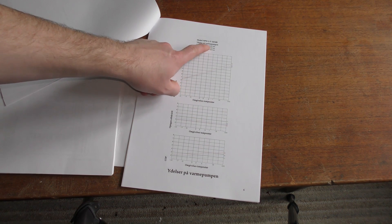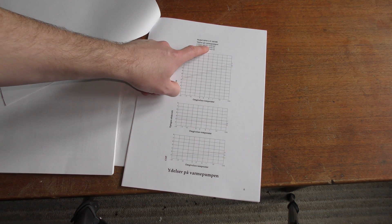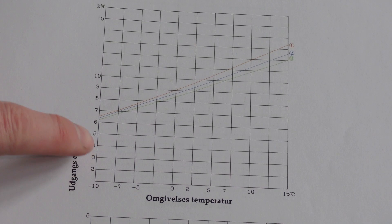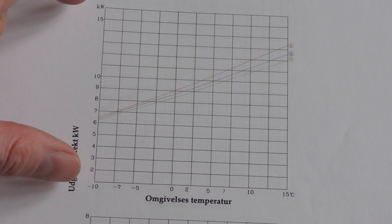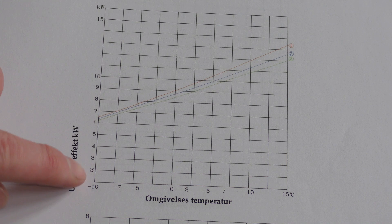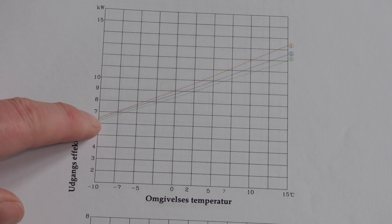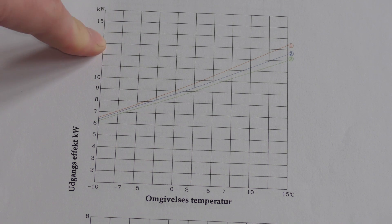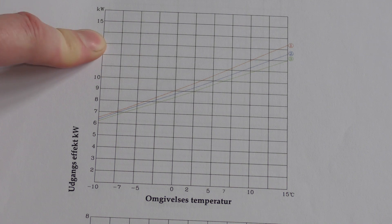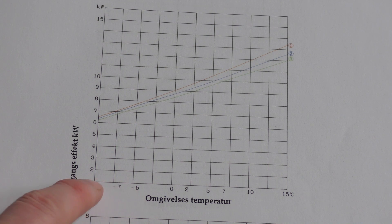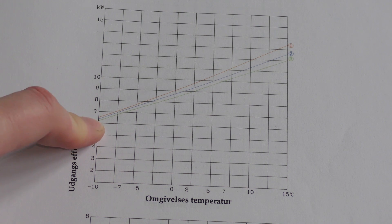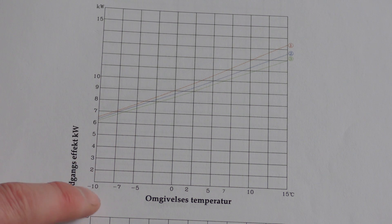There are three different flow lines. This is if you want the temperature coming into your house to be 35 degrees, 45 degrees, or 55 degrees. Here we have the amount of power we get out of the device. When it's running, we can expect to get somewhere between six kilowatts at the low end and up to about 13 or 14 kilowatts of heat energy, at different outside temperatures. If the temperature outside is minus 10 degrees Celsius, we only get about six kilowatts — more or less the same as the power we put into it.